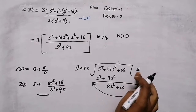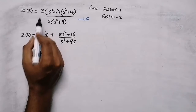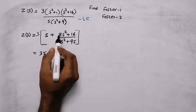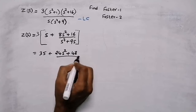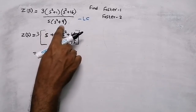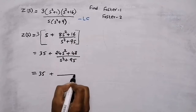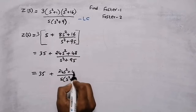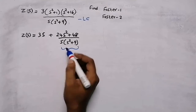Writing the new impedance function with the constant 3 multiplied back in: 3s plus (24s squared plus 48) divided by (s cubed plus 9s). The denominator s cubed plus 9s can be written as s(s squared plus 9). So the impedance becomes 3s plus (24s squared plus 48) divided by s(s squared plus 9).